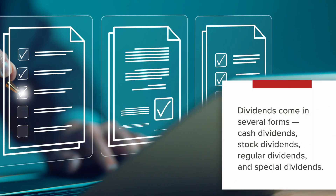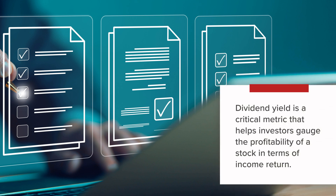So, dividends come in several forms: cash dividends, stock dividends, regular dividends, and special dividends. Understanding the differences between these types is essential for investors who want to make informed decisions about income-generating investments. Dividend yield is a critical metric that helps investors gauge the profitability of a stock in terms of income return.